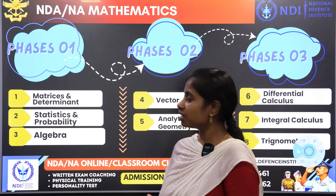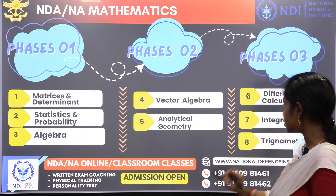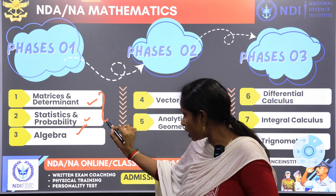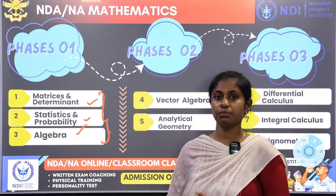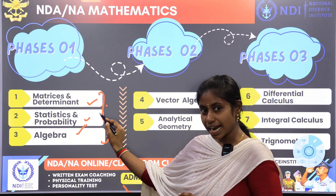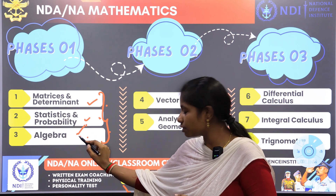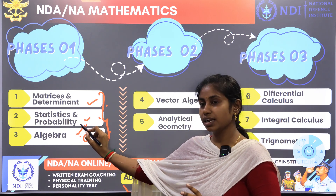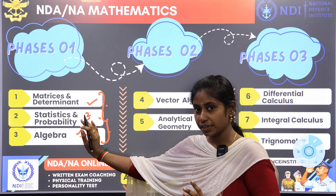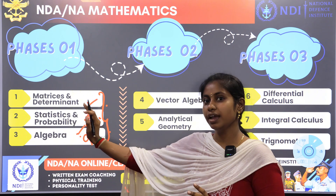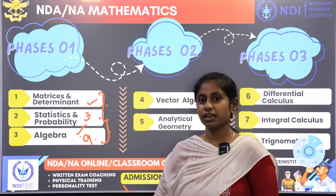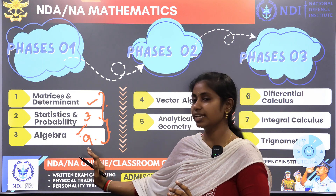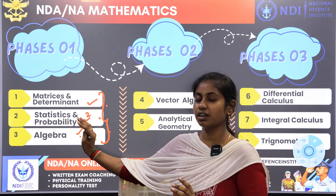Now, the preparation strategy has three phases. Phase one covers: matrices and determinants, statistics and probability, and algebra. Especially for non-mathematical background students, focus on these three chapters. In algebra, there are nine subtopics. Statistics and probability has two subtopics — statistics and probability. Matrices and determinants also has two topics. By clearing these three chapters, you can attend 35 to 40 questions.